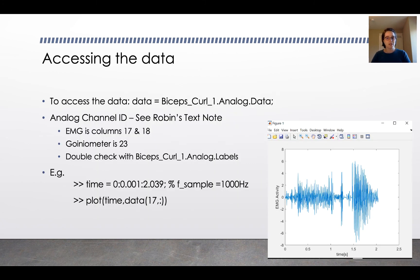Finally, specific to our data set, to access the data you're going to want to use the file name dot analog dot data. There's a note in the folder where our data is stored about where you can find the different things on the different channels. So the EMG is column 17 and 18. The goniometer, which measures the angle, is 23. And you should double check everything by checking the labels analog dot labels in your file.